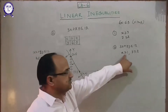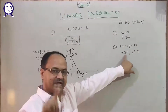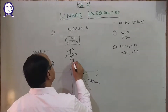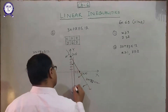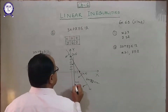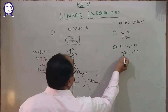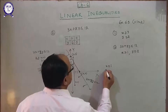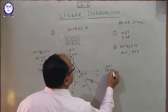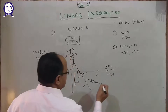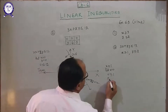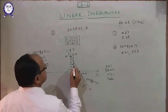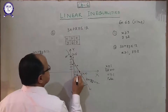Next, x greater than or equal to 1 means the line parallel to the y-axis. This is the line x equals 1. When you put x equal to 0 in x greater than or equal to 1, you get 0 greater than or equal to 1, which is false. Therefore the shaded portion is away from the origin — it means this portion.